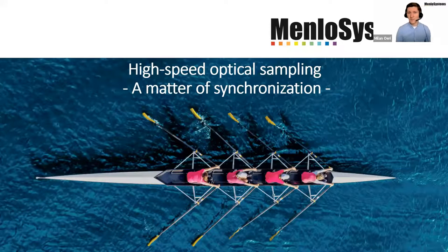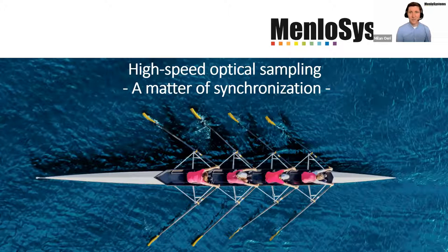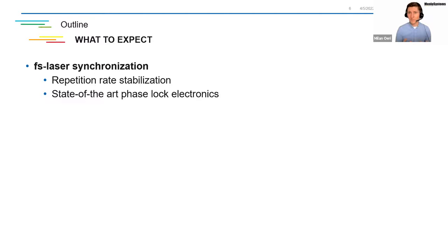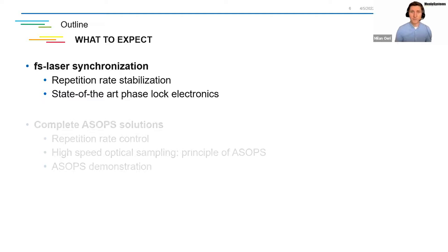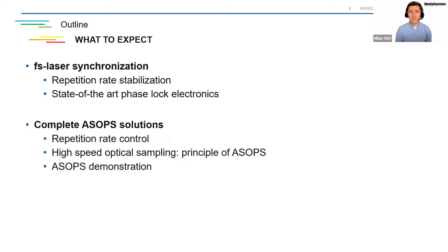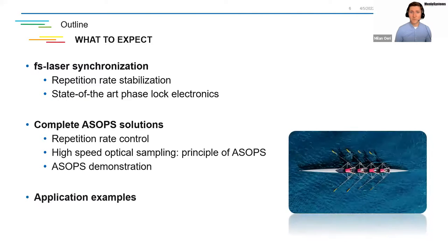Let's talk about synchronization. I'd like to dedicate this webinar to high-speed optical sampling and where you actually require synchronization. What can you expect from this presentation? First, we would like to introduce how important synchronization is and how you realize it to synchronize femtosecond fiber lasers — you can think of repetition rate stabilization. We will also show you state-of-the-art phase electronics as offered by Menlo Systems. As one example, we picked out a solution that makes use of ultra-fast sampling called ASOPS — asynchronous optical sampling — where you lock two laser systems to each other to achieve an ultra-fast sampling technology used in different applications.